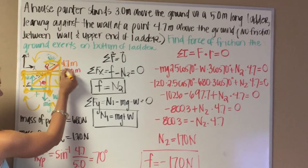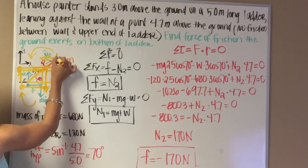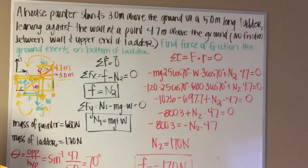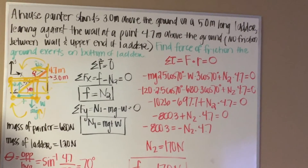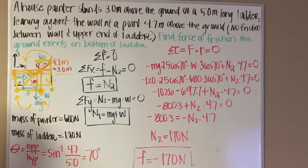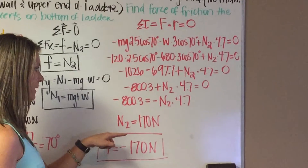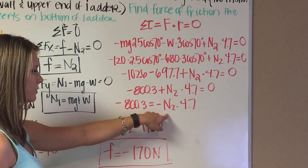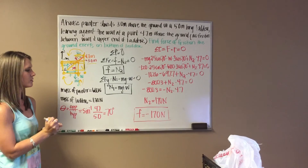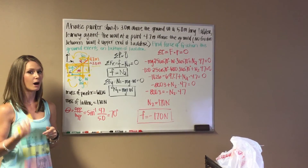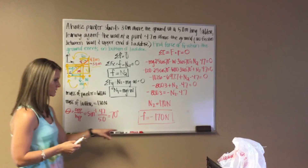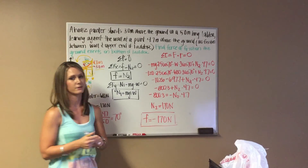We want the distance from the wall contact point to the reference point, which is 4.7 meters as given — no need to use cosine or sine for this term. Solving for all the numbers, we get the second normal force equal to 170 newtons. Since friction equals the second normal force, friction is 170 newtons. And because friction acts in the opposite direction to the wall's normal force, friction is negative 170 newtons.